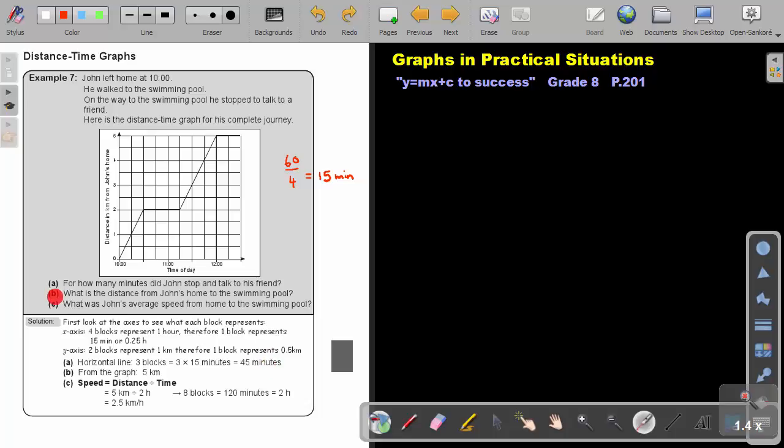Number B. What is the distance from John's home to the swimming pool? So remember, walk, stop at the friend, walk to the swimming pool. So what is the distance? It will be five kilometers.